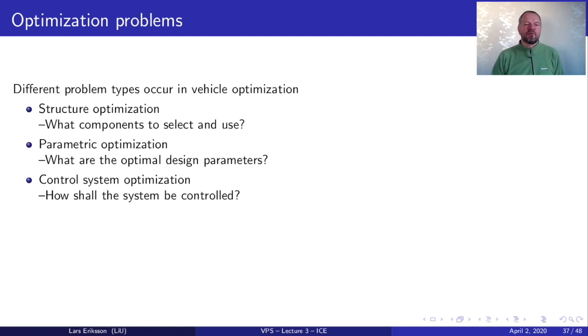Finally we have control system optimization where we are wondering how should the system be optimally controlled. Especially if we have some degrees of freedom like we have in a hybrid. And this is the main topic of this course to work with is control system optimization.